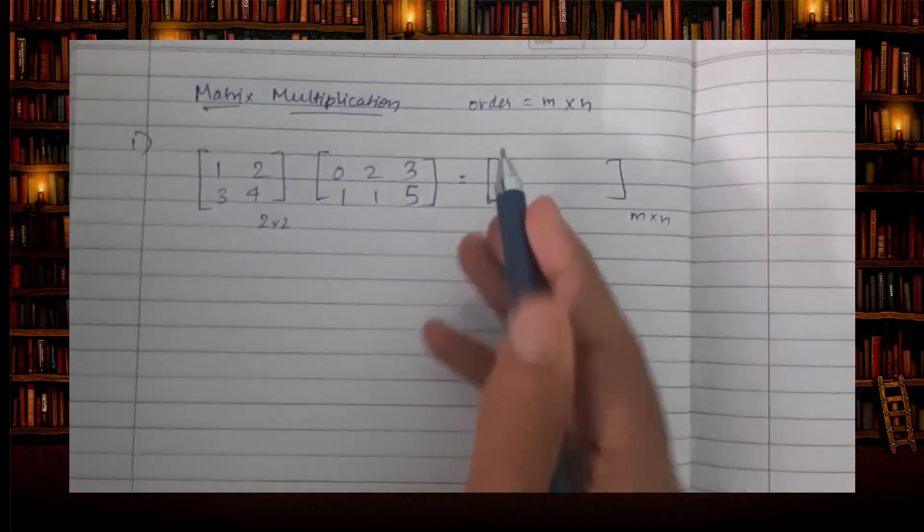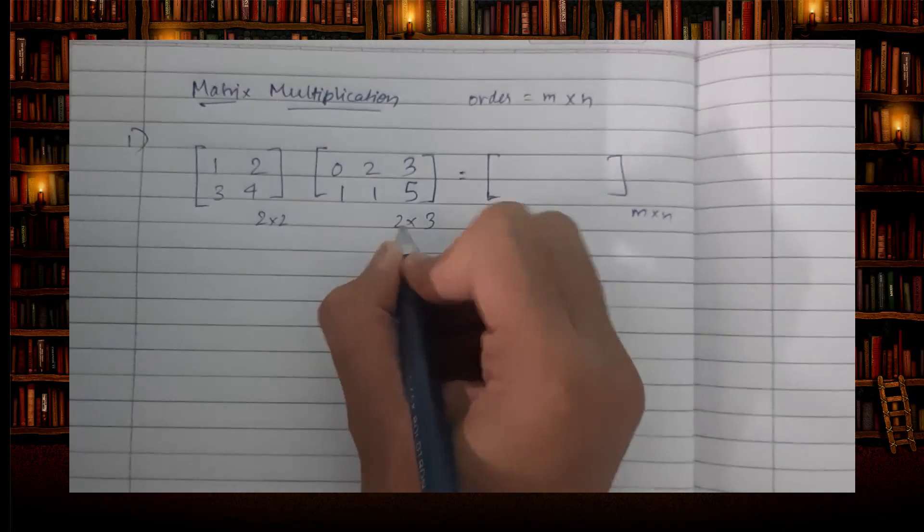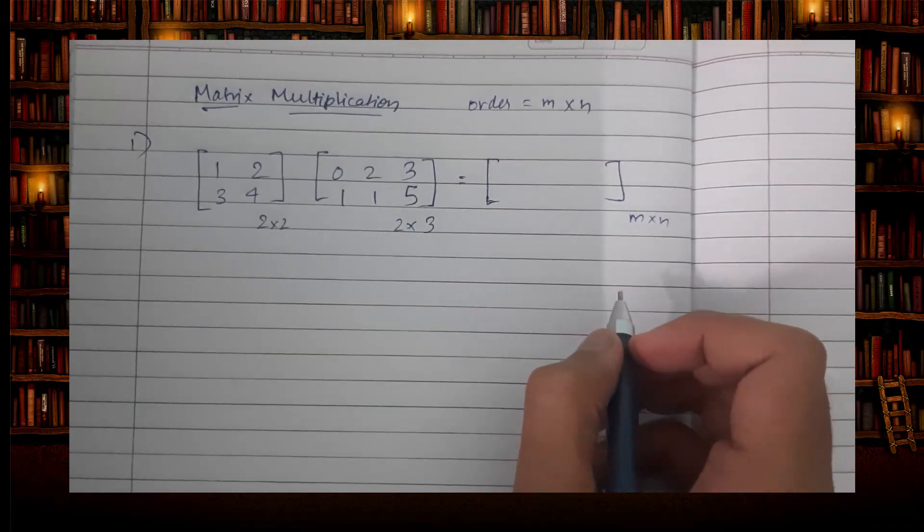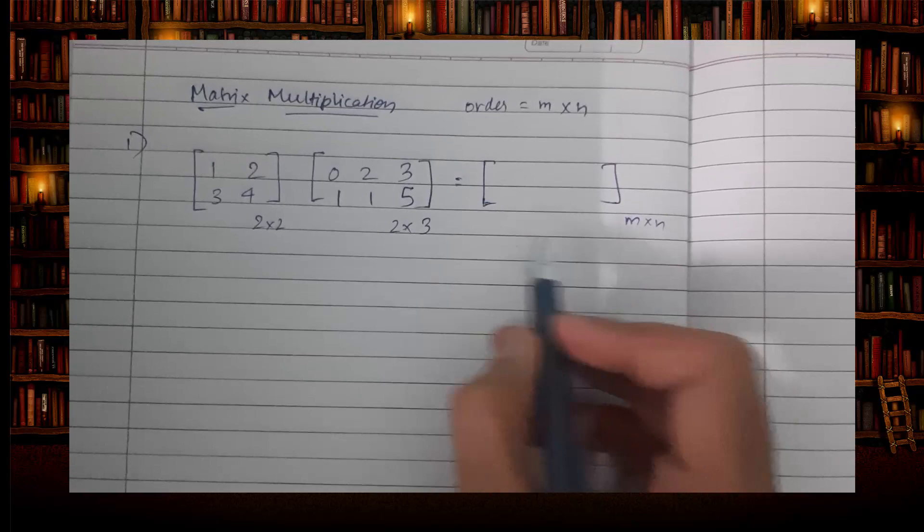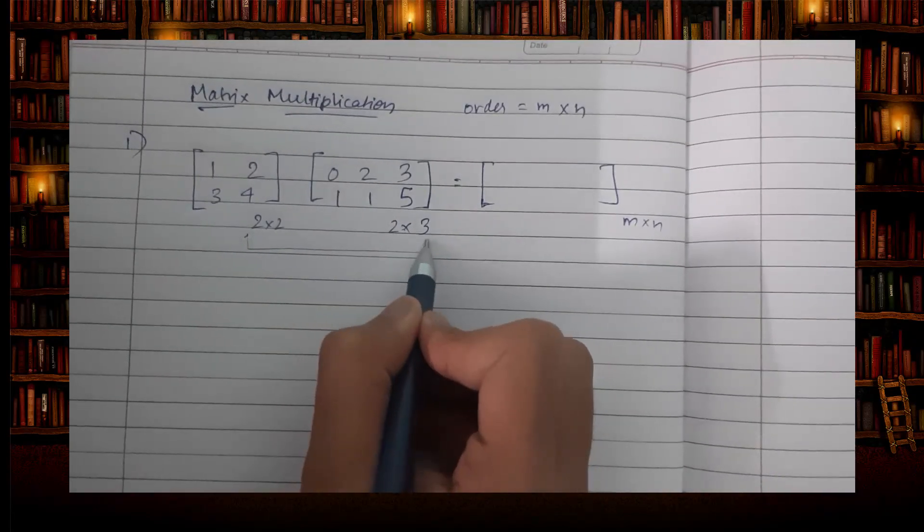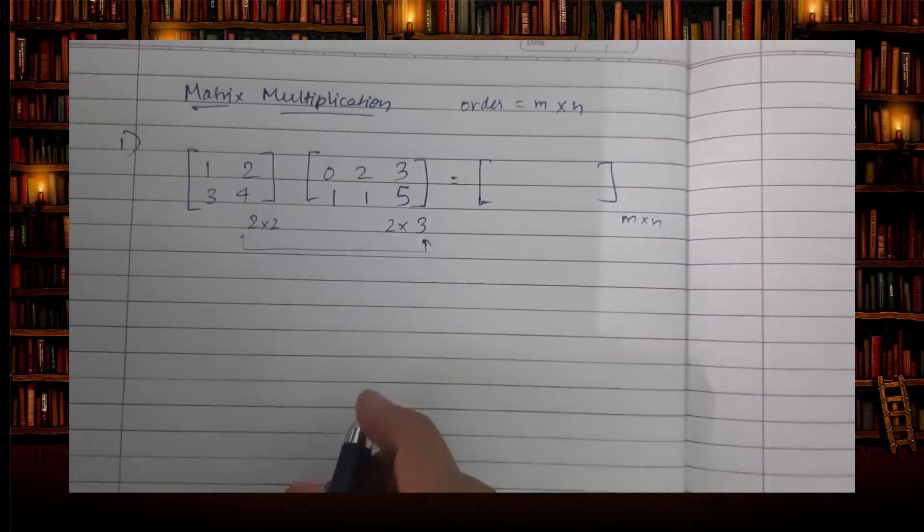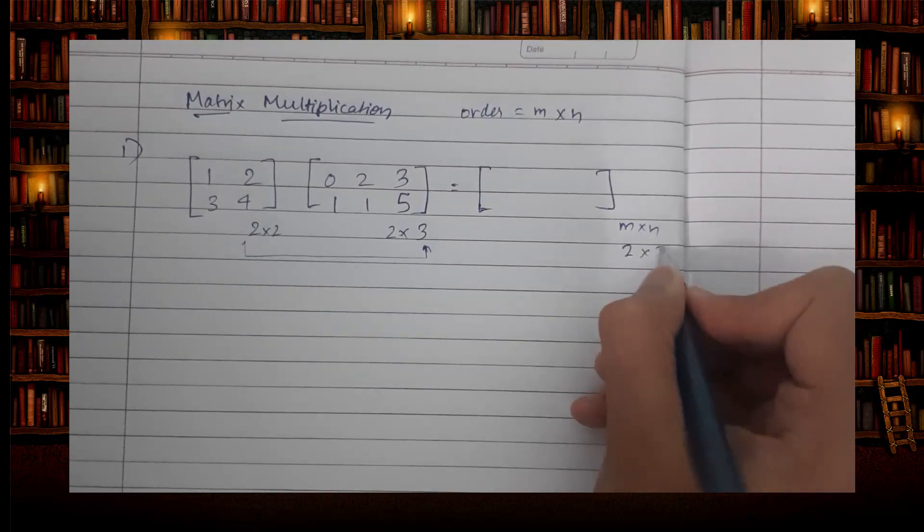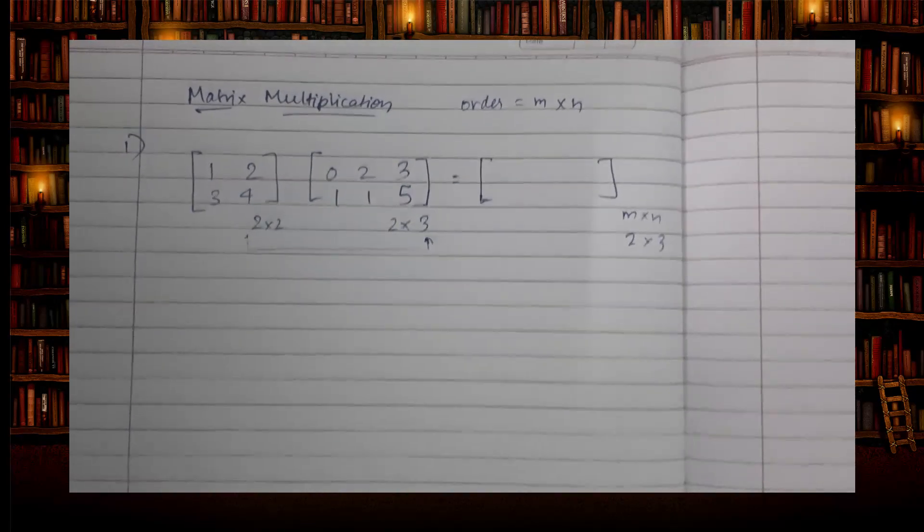Two rows and three columns, so 2 into 3 matrix. The answer will be in the form of 2 into 3. It will be in the form of 2 into 3.